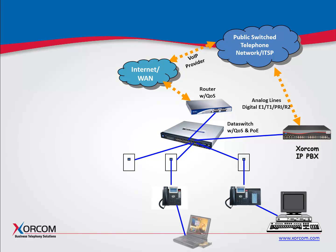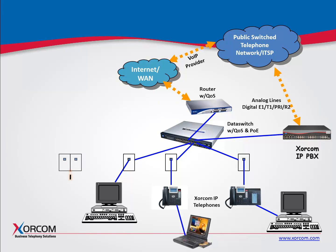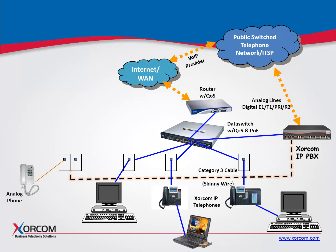Now, most companies have something in their office that is analog — it may be a cordless telephone, analog phone, maybe a credit card machine, a fax machine. With Sorcom, we can connect your existing cabling — your CAT3 cable or the skinny wire — directly to ports on our telephone system. We have the ports built in, or it could also be connected through an analog bank. Sorcom has done a very nice job of migrating analog technology into the world of IP.